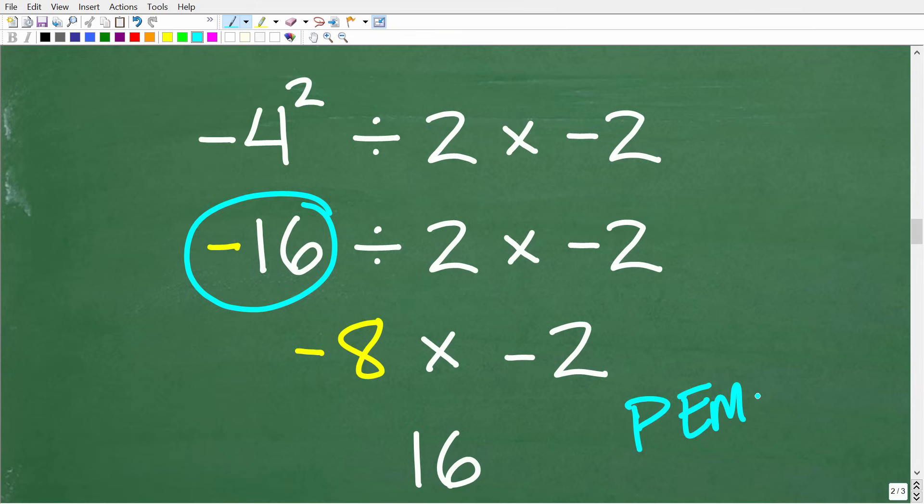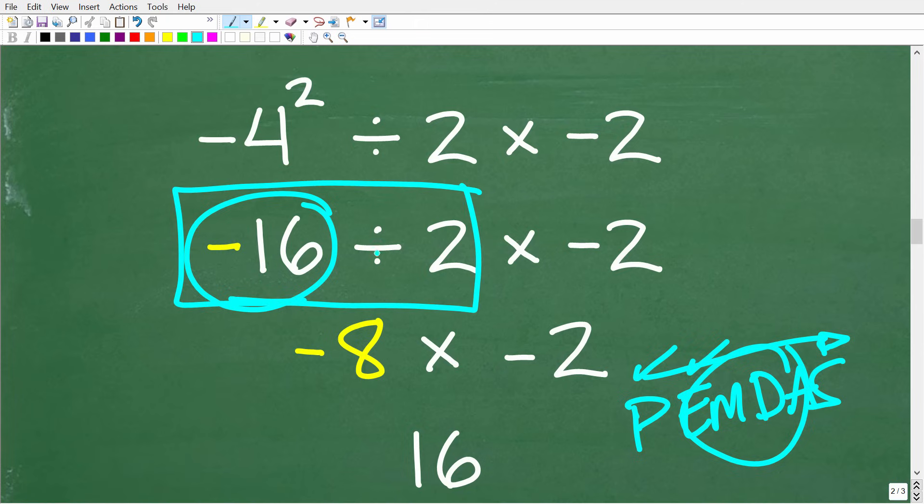So going back to our PEMDAS here. So let's kind of just go through the checklist from left to right. So do we have any parentheses? No. Do we have any powers? Yes, but we took care of those powers, any powers that we had. We have negative 16 here. So do we have any multiplication and division in this problem? Yes, we do. So what do we see first from left to right? Well, we see the division first, right? So division is what we see first from left to right, not the multiplication. So we would not multiply 2 times negative 2 first.